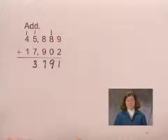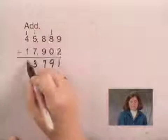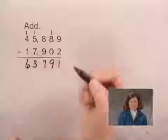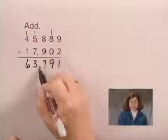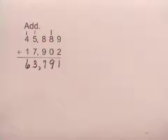And finally, we add the ten thousands. 1 plus 4 is 5, plus 1 is 6, which gives us 6 ten thousands. We put a comma to separate the periods. And the sum is 63,791.